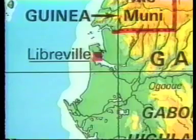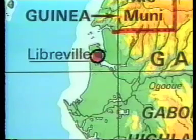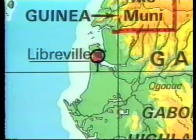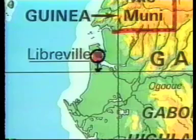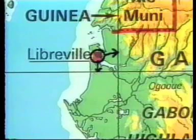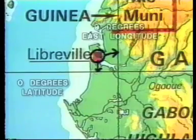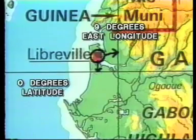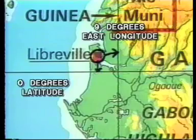For example, Libreville, Gabon is located in Africa, almost on the equator, or zero degrees latitude, and it is located just west of ten degrees east longitude. Its coordinates are shown as zero degrees latitude, nine degrees east longitude.